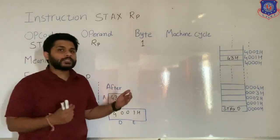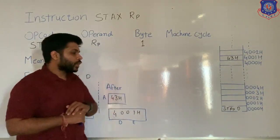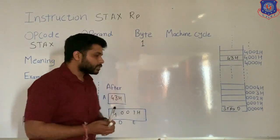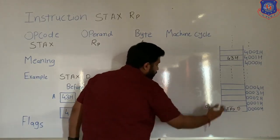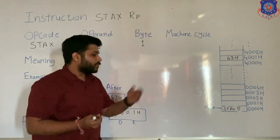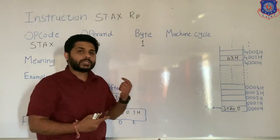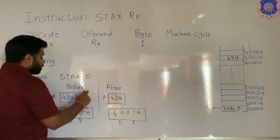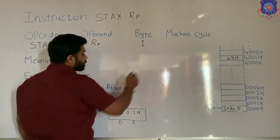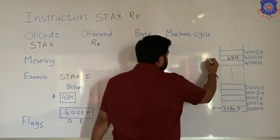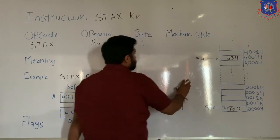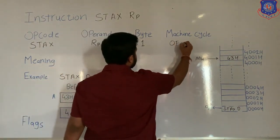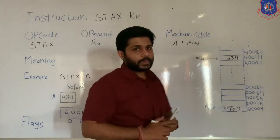After the instruction is stored in memory, the processor will start doing its work — fetch, decode, and execute. In the first step, the processor performs the opcode fetch machine cycle. When the microprocessor performs the opcode fetch, the whole instruction is transferred to the microprocessor. After decoding, it will execute. While executing this instruction, the processor is transferring data from the accumulator to the memory location, meaning it performs a memory write operation. So to write data, the processor has to perform the memory write machine cycle. For this instruction, two machine cycles are needed: opcode fetch plus memory write.